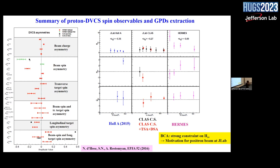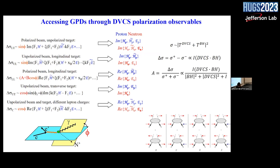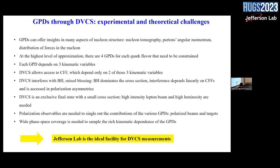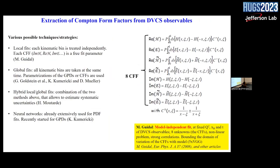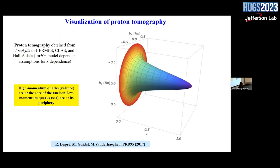When you have different lepton charges in the beam and form the asymmetry, you are sensitive to the real part of the CFF rather than the imaginary part. Other asymmetries are mainly sensitive to the imaginary part. For the real part, you either measure the cross-section — which is strongly dominated by Bethe-Heitler — or you do lepton charge asymmetries. HERMES did this, and those data show strong sensitivity to Re(H) in the fits. This motivates pushing for a positron beam at JLab.